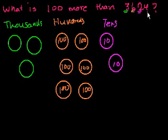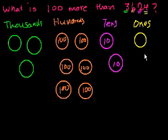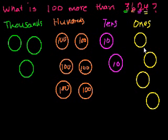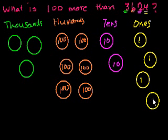And then finally we have the 1s place. How many 1s do we have? 1, 2, 3, 4. You could view these as the tops of cans of marbles, or as some type of currency. If you gamble, you could view these as poker chips — where these are $1, $10, $100, $1,000 each.